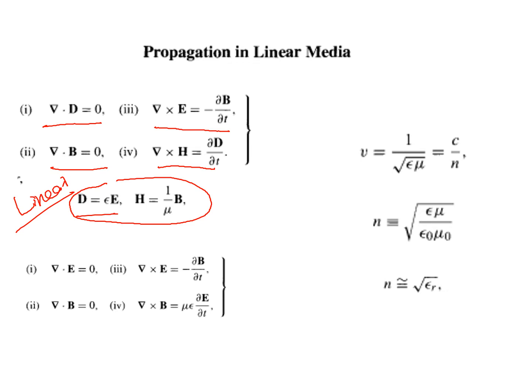For a homogeneous medium, epsilon and mu are constant everywhere — that means they do not vary from one point to another point. So for a homogeneous medium, Maxwell's equations reduce to: del dot E equal to 0, del dot B equal to 0, del cross E equal to minus dou B by dou t, and del cross B equal to mu epsilon times dou E by dou t.